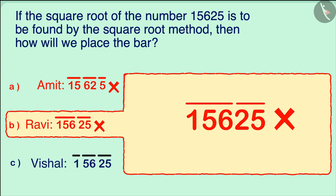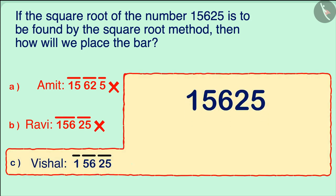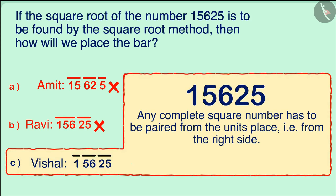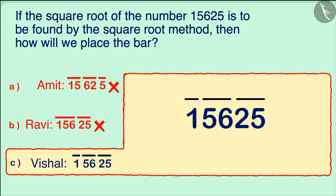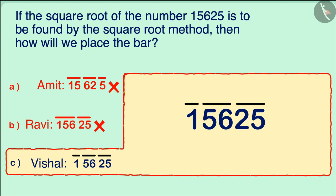The correct method is that while pairing the digits in the square root of any perfect square number, we have to place the bar by pairing from the units place, that is from the right side. Because the number of digits here is odd, there is only one number below the leftmost bar. Hence, option C of Vishal is correct.